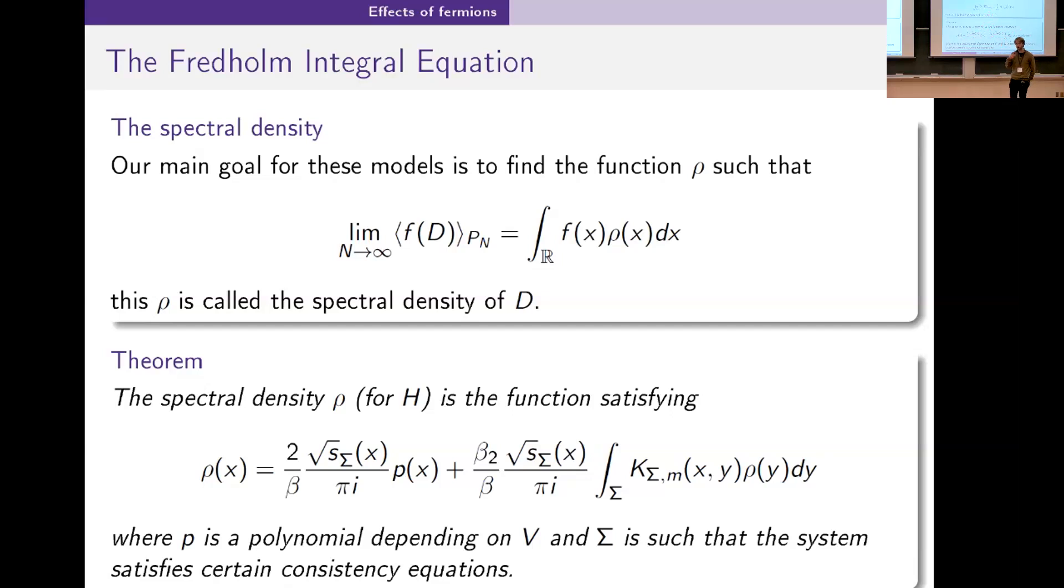That turns out to solve this complicated integral equation. If you weren't to add a massive term what you would get is just this first part, which is very nice and solvable. But the mass interaction adds this integral equation term here that makes it self-referential and hard to deal with.